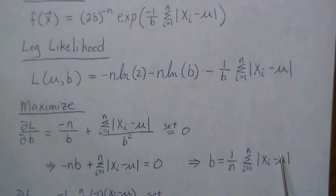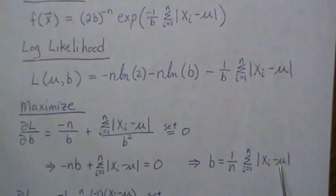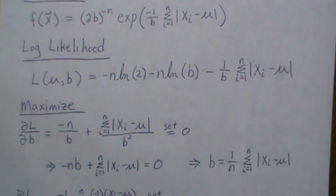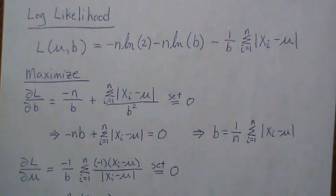Now we don't know what mu is, so we need to find the maximum likelihood estimator of mu so we can plug it in here to find the maximum likelihood estimator of B. So this is what we do.